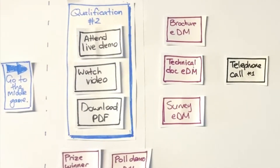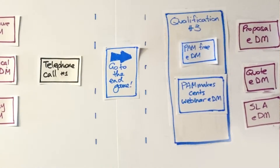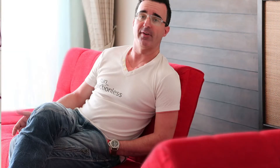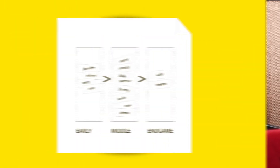A sales system spells out the formula to making a customer in a clearly understood sequence. If you serve small business, you may require 15 customer interactions to make a customer. If you're dealing with enterprise, it could be 25 upwards. To make the journey fun, we group these interactions into an early, middle, and end game.